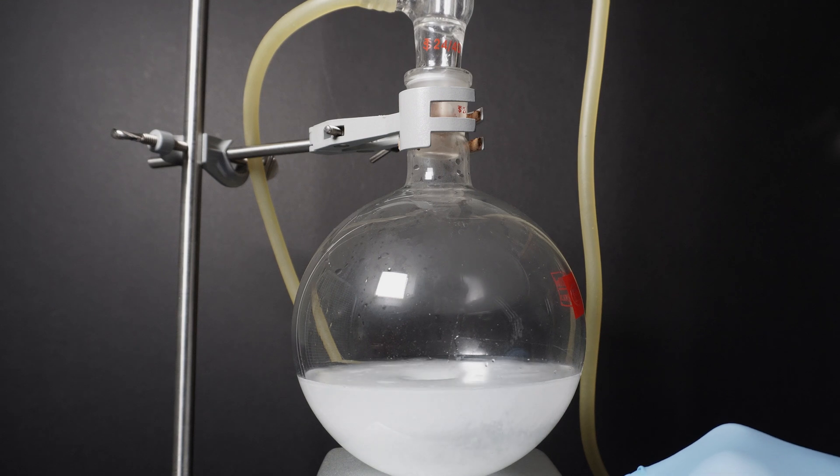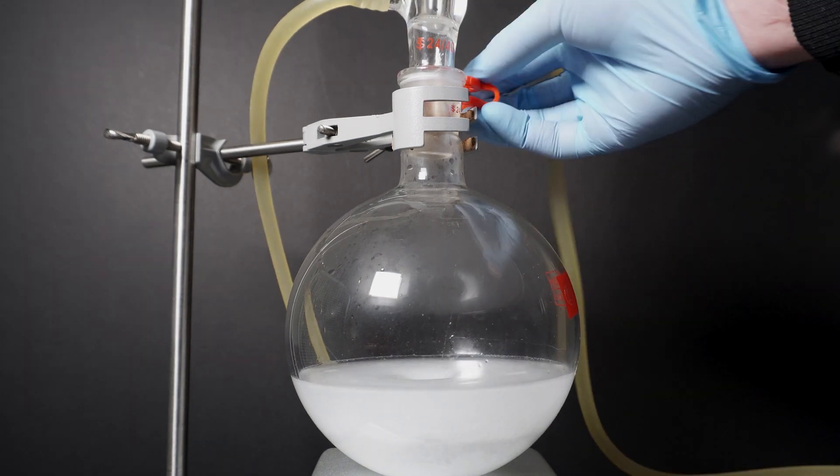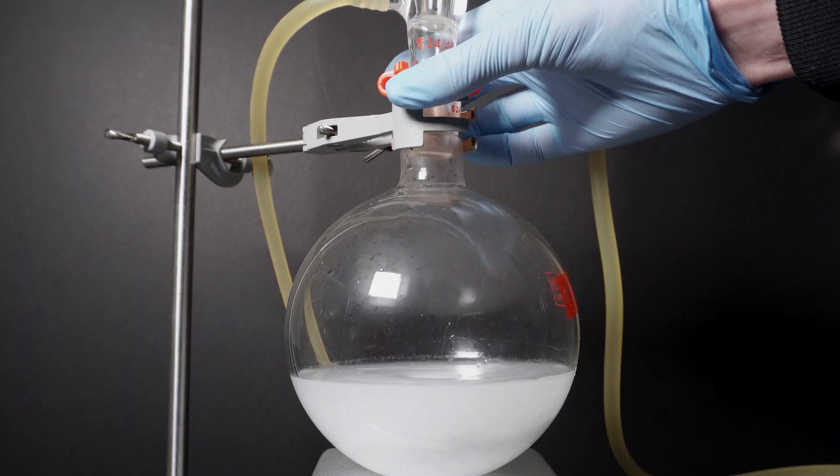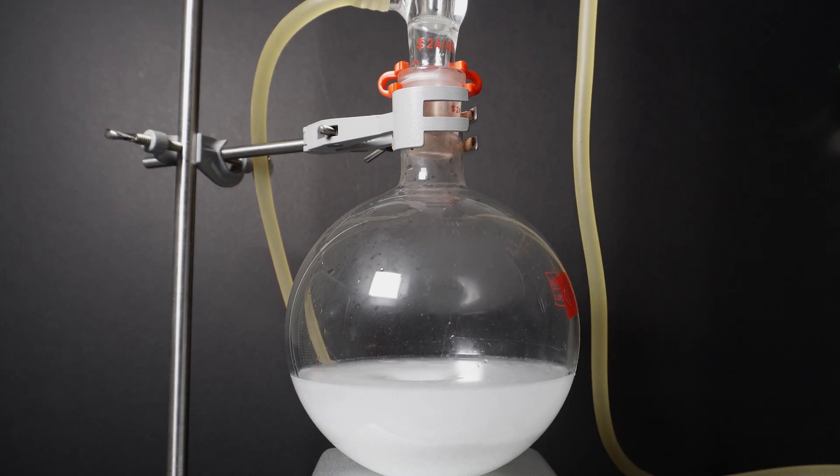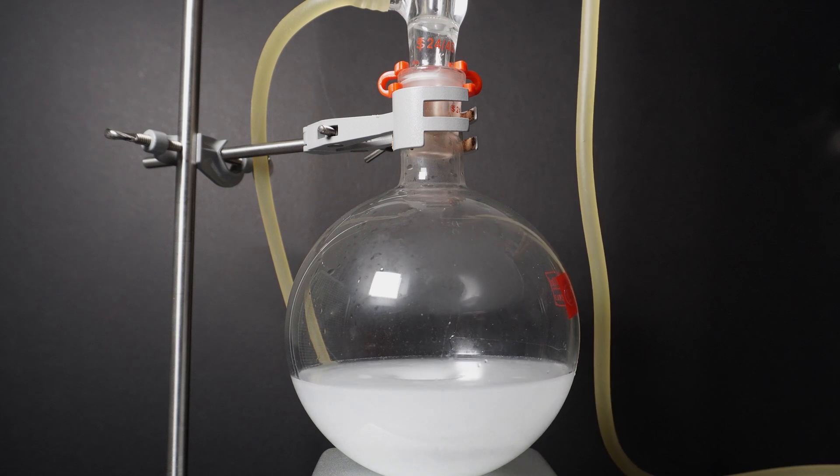This method can also be scaled up and I actually scaled it down for the purposes of this video. After this I add a cold water condenser on top, turn on stirring, and attach a plastic clip between my condenser and my flask for safety. Then I turn on my hot plate to medium heat.